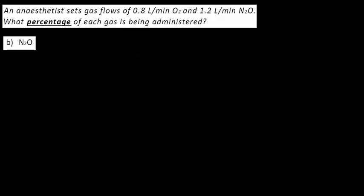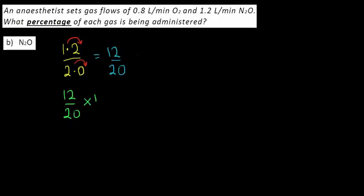For the case of nitrous oxide, because we only had two gases we know the answer must be 60 percent, but let's check. For nitrous oxide we have 1.2 liters per minute and the total is 2.0. Turning that fraction into one with whole numbers only, I'll multiply top and bottom by 10 to get 12 over 20. To find the proportion as a percentage I'll multiply the fraction 12 over 20 by 100.